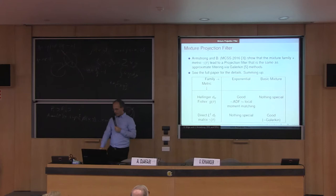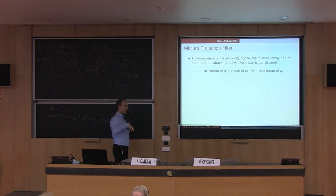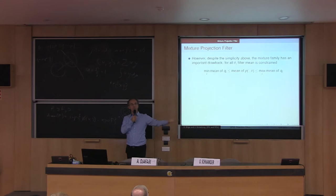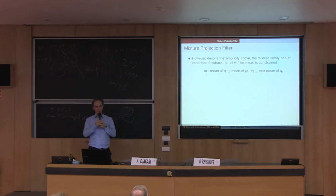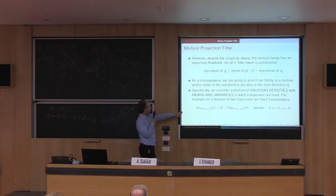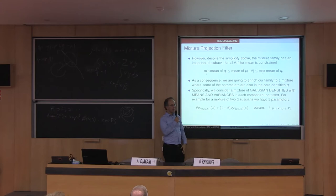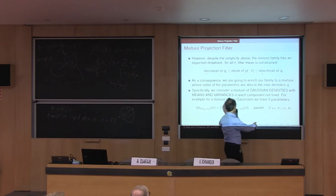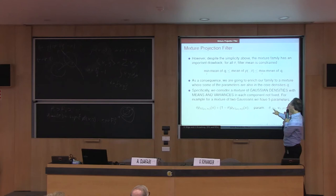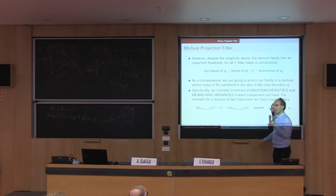There is a problem with a fixed convex combination of densities: the mean of the combination will be between the lowest and highest means of the components, which can be a severe limitation for real filtering problems. So instead, we can take a mixture where the mean and variance of each component are also parameters. For a mixture of two Gaussians, you have five coordinates: the mixing parameter theta, plus the mean and variance of each Gaussian — five parameters for a mixture of two distributions.